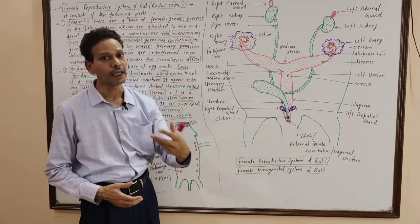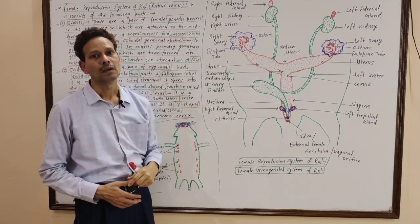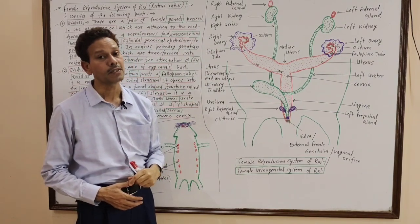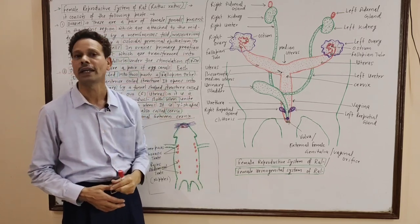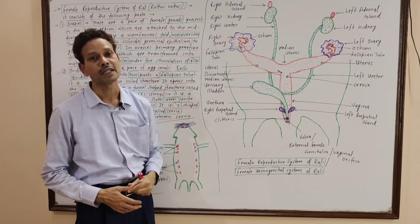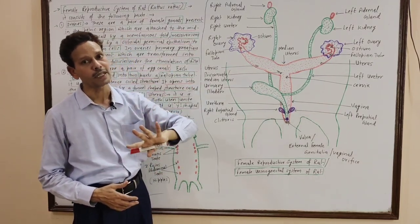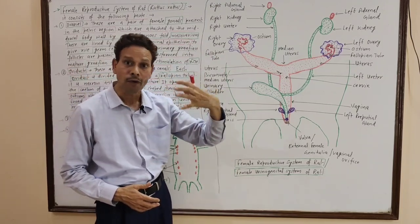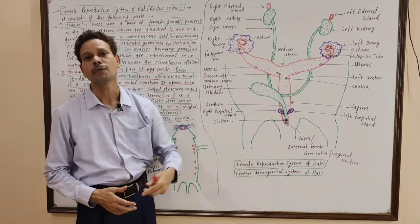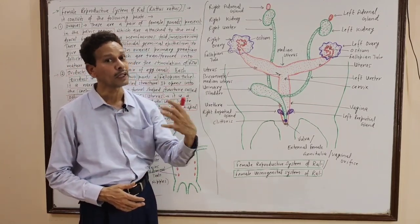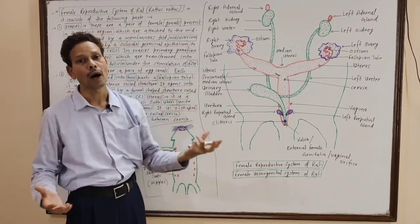These Graafian follicles undergo maturation under FSH hormone, that is Follicle Stimulating Hormone, which is produced by the adenohypophysis, the anterior lobe of the pituitary. Under the stimulation of FSH, the primary follicles, which are undeveloped, are transformed into mature Graafian follicles to give rise to female gametes — ova, eggs.